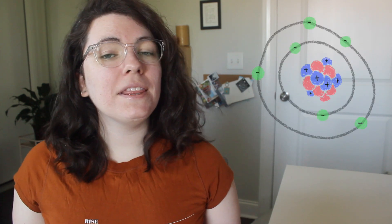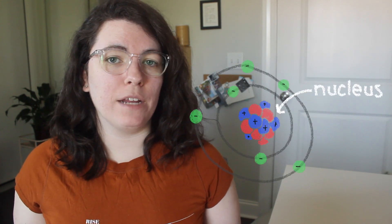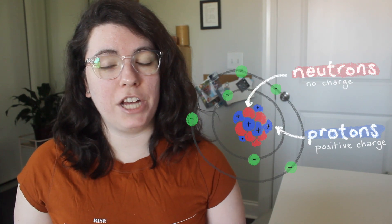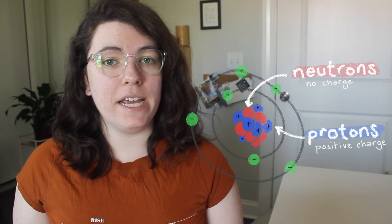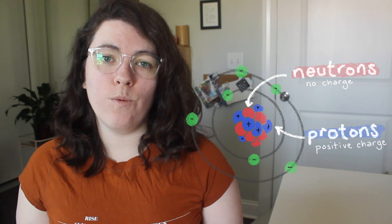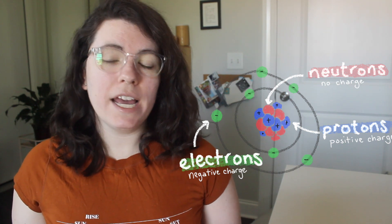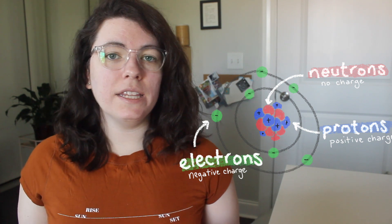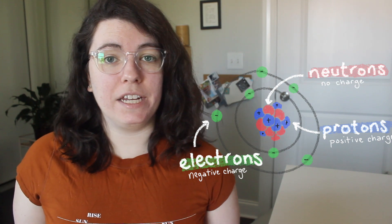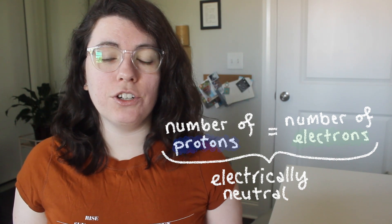Atoms are very tiny, but this is a representation of what an atom might look like if you could see it. The middle part of an atom is called a nucleus, and it contains protons, which have a positive charge, and neutrons, which have no charge. Typically an atom will have the same number of protons and neutrons in its nucleus, except for hydrogen, which only has one proton and no neutrons. Electrons orbit around the nucleus, and electrons have a negative charge. When an atom has an equal number of protons and electrons, it is electrically neutral.